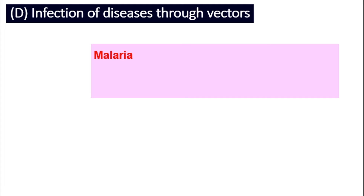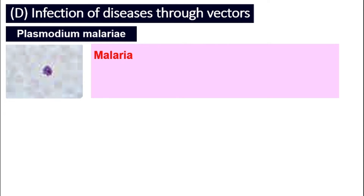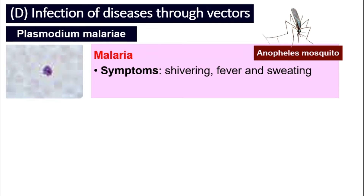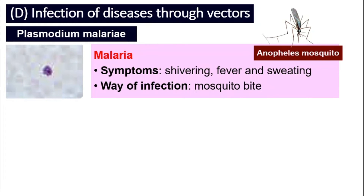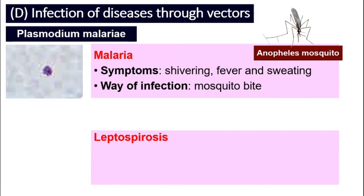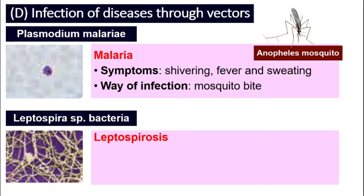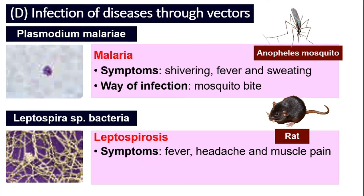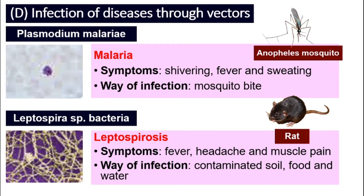Malaria — the pathogen is Plasmodium malaria, and it is spread by the Anopheles mosquito. The symptoms are shivering, fever, and sweating, and it is infected through mosquito bite. Leptospirosis — the pathogen is Leptospira sp. bacteria, and it is spread by rats. The symptoms are fever, headache, and muscle pain, and the way of infection is through contaminated soil, food, and water.